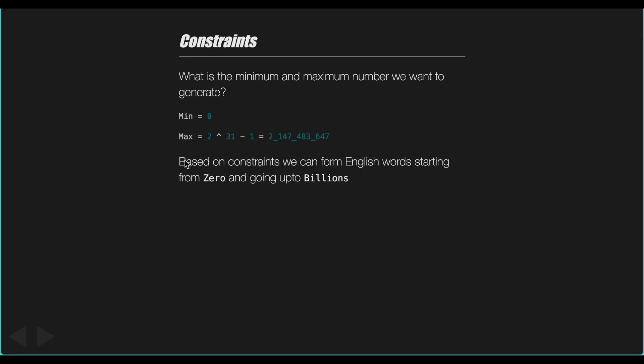Let's see how we can actually solve this problem. First thing we should check is what are the constraints. On LeetCode it is given that the number should be greater than or equal to zero and less than or equal to 2 to the power of 31 minus 1. So our minimum number can be zero and our maximum number can be two billion, one hundred forty seven million, four hundred eighty three thousand, six hundred and forty seven. The constraints give us a starting and ending point for our solution.